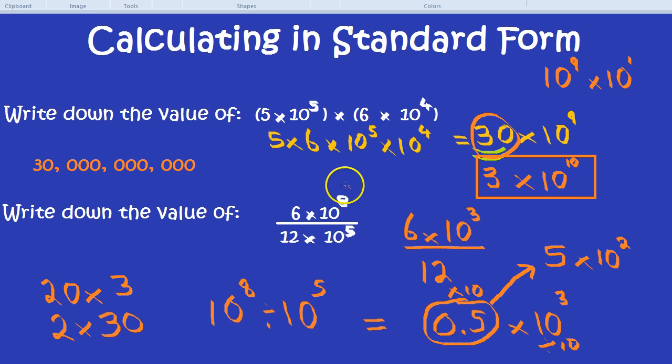So the final answer for this whole calculation in standard form is 5 times 10 to the power of 2. As an actual number, that would be 5 followed by 2 zeros or 500.